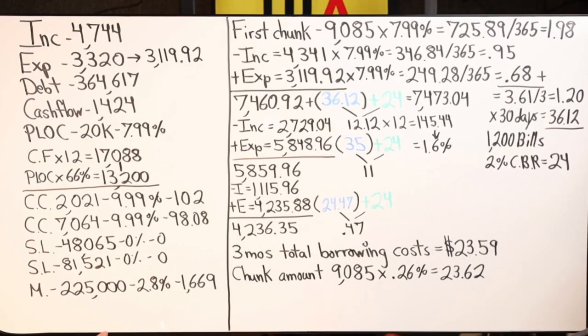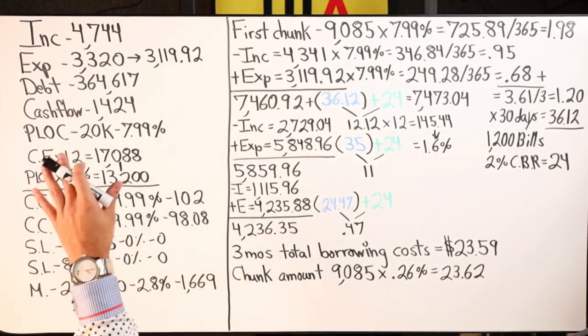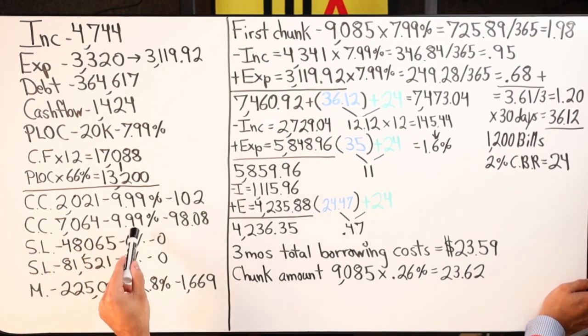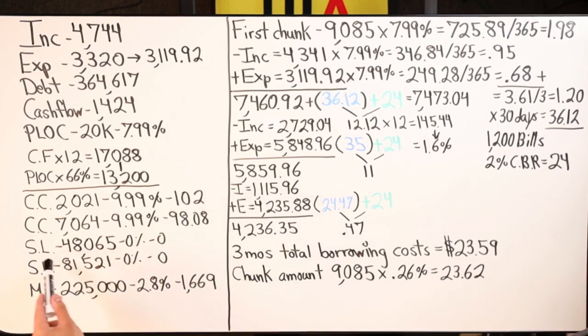In this particular situation we don't even have to chunk that high. You may experience this where your chunk range is thirteen thousand two hundred but you only have ten thousand dollars of credit card debt — well, just do a ten thousand dollar chunk. In this case we've got two credit card debts, two student loans, and a mortgage. Total three hundred sixty-four thousand. The two credit card debts are both charging nine point nine nine percent simple interest with monthly payments of one hundred two dollars and ninety-eight dollars and eight cents.